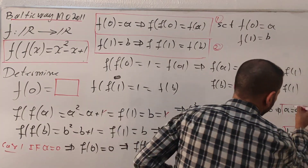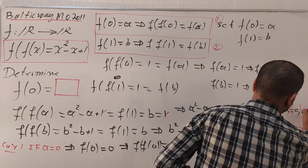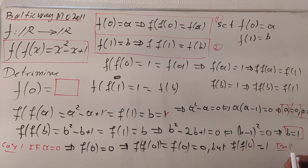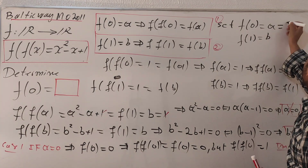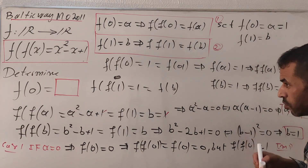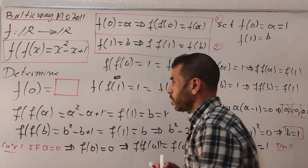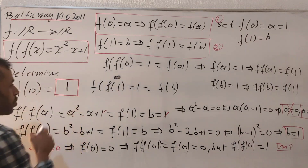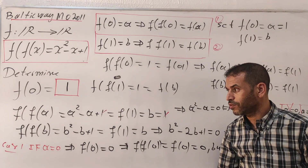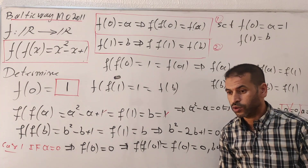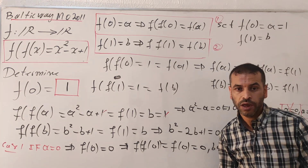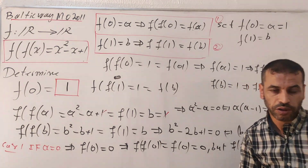So a equals one is the valid solution, which means f of zero equals one. That's the value of f of zero. Thanks for watching — don't forget to hit the subscribe button and support our channel. We'll see you in the next video, bye.